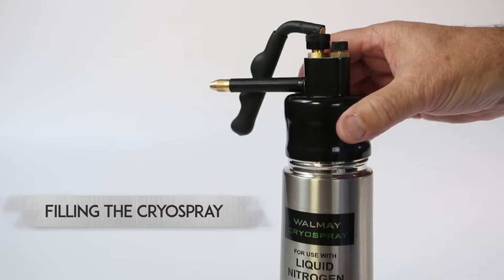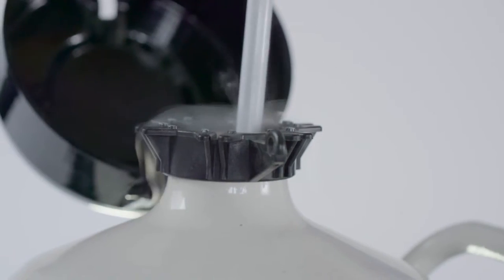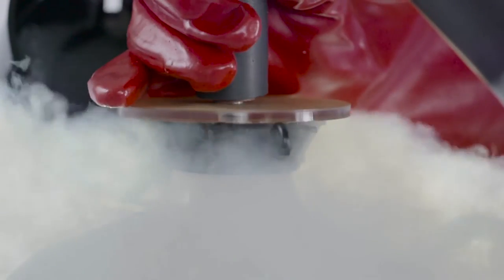Unscrew the turret from the flask. Insert the Walmay liquid nitrogen extractor into the Dua, pushing it down until the rubber stopper seals the Dua opening.